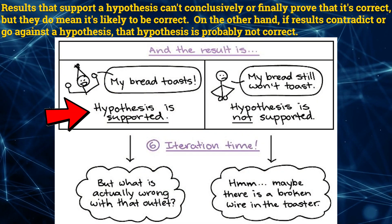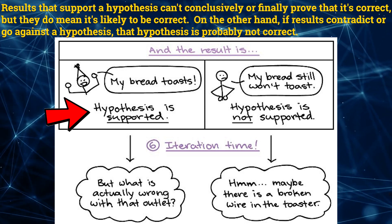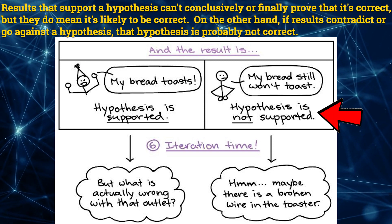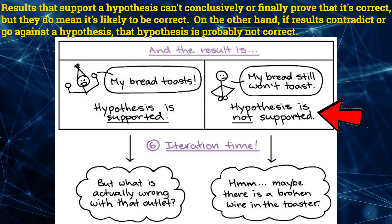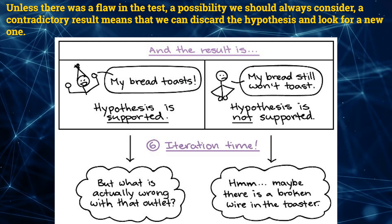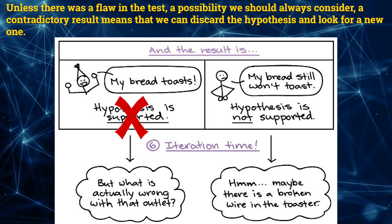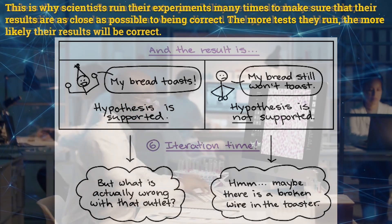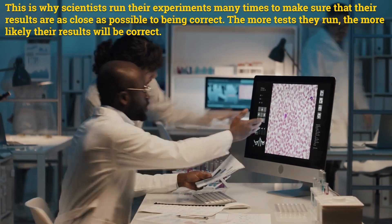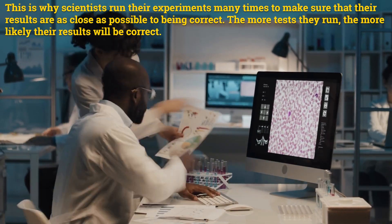Results that support a hypothesis can't conclusively prove that it's correct, but they do mean it's likely to be correct. On the other hand, if results contradict the hypothesis, that hypothesis is probably not correct. Unless there was a flaw in the test — a possibility we should always consider — a contradictory result means we can discard the hypothesis and look for a new one. This is why scientists run their experiments many times: the more tests they run, the more likely their results will be correct.